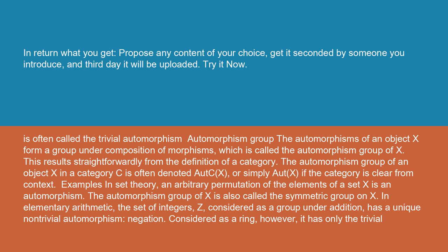Examples: In set theory, an arbitrary permutation of the elements of a set X is an automorphism. The automorphism group of X is also called the symmetric group on X.